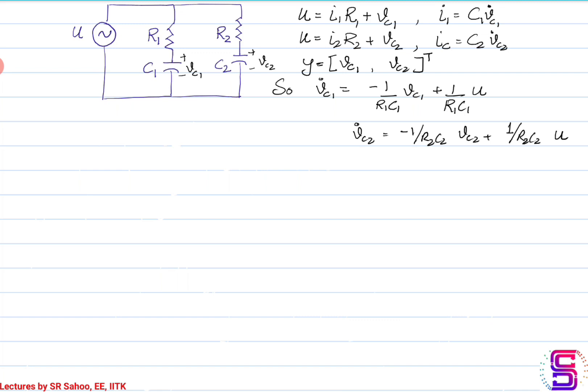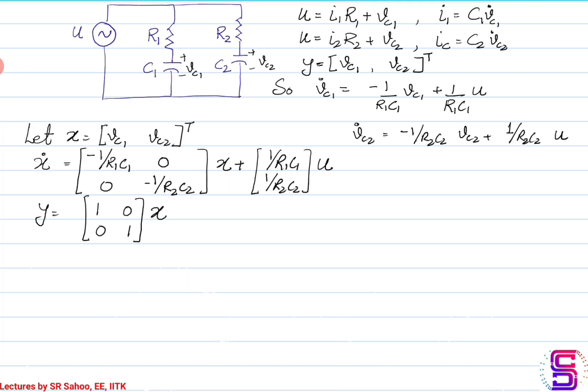Using simple circuit theory, it can be established that the voltage across capacitor 1 satisfies: Vc1_dot = (-1/R1C1)·Vc1 + (1/R1C1)·U. And the voltage across capacitor C2 satisfies: Vc2_dot = (-1/R2C2)·Vc2 + (1/R2C2)·U. Expressing this in state space form, I choose the state vectors to be the voltages across the capacitors, Vc1 and Vc2.